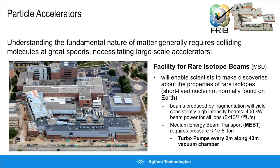One of the newest accelerators under construction is at Michigan State University — the Facility for Rare Isotope Beams, or FRIB. It's unique because instead of accelerating protons and antiprotons as at CERN, they're accelerating very heavy ions, particularly uranium. The beam will have 5×10¹³ uranium ions per second. The components needed to move uranium ions, mass 238, to high speed are quite different from those for a proton or electron.